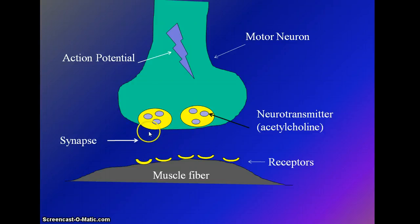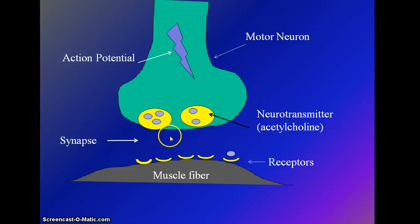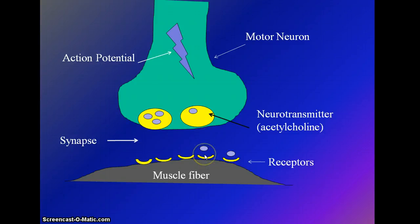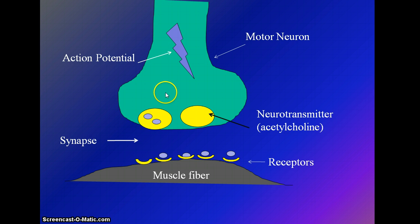The acetylcholine will then cross the synapse — the physical gap between the motor neuron and the muscle fiber — and bind to acetylcholine receptors. So the signal down the motor neuron is electrical, but the signal across the synapse is chemical.